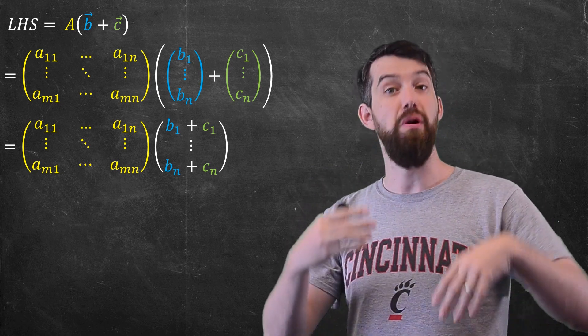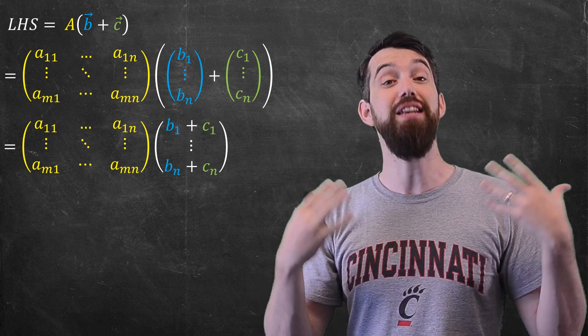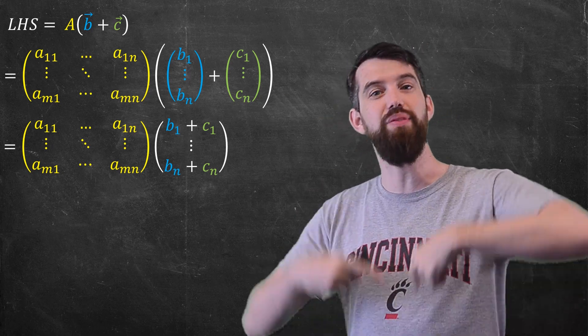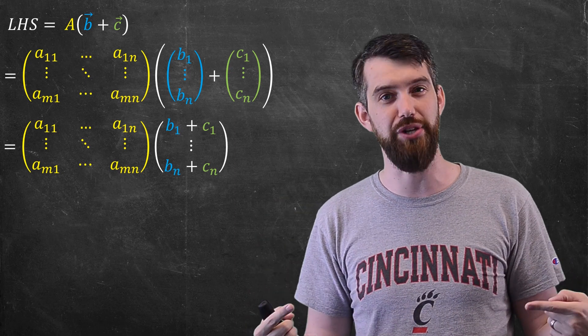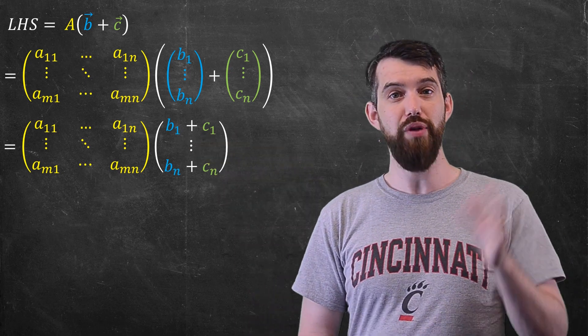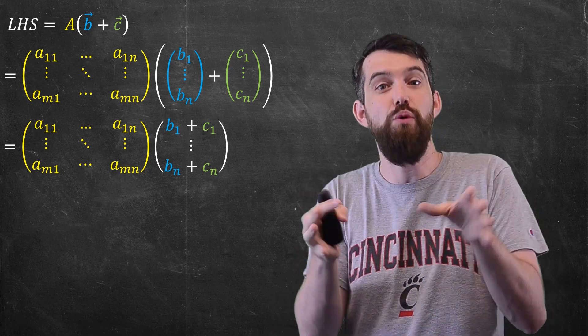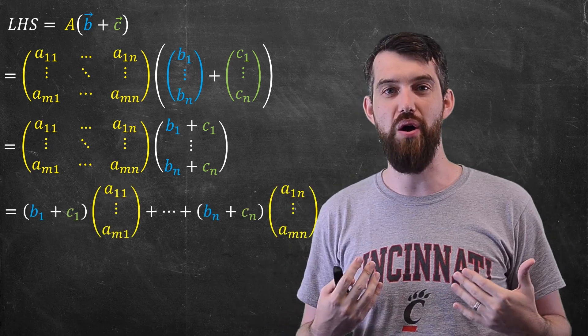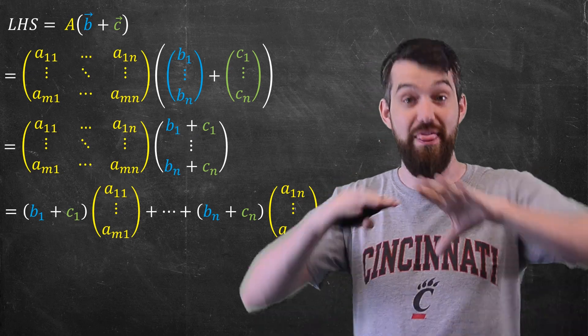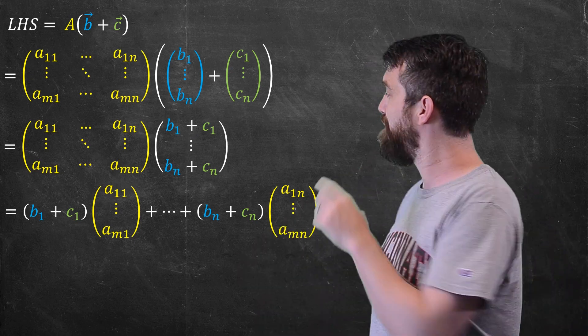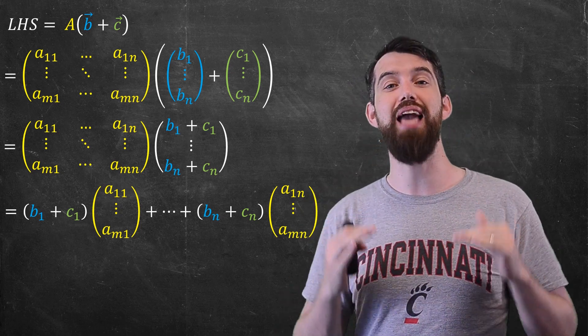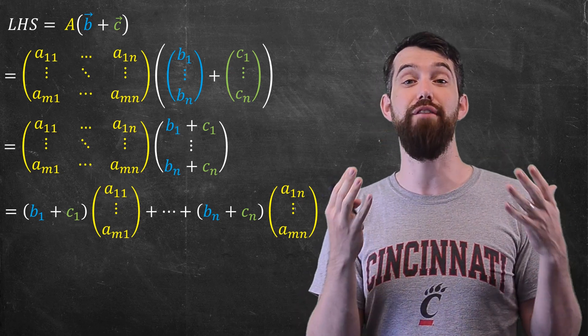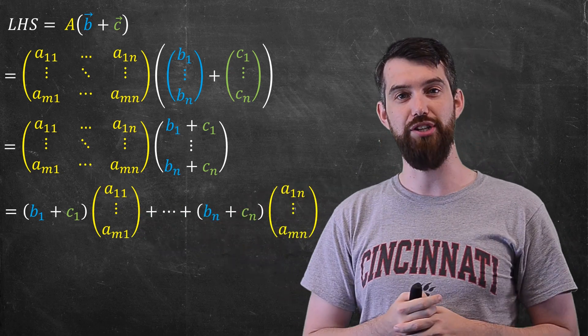So now I have a matrix multiplied by a vector, and I can do the definition of the matrix vector product. Remember, the definition of the matrix vector product was the components of the vector became the scalars in the linear combination whose columns were the columns of the matrix A. So in other words, what I first have is the first component of the vector, the B_1 plus C_1, multiplied by the first column of A. And then that goes all the way along until I have the final scalar, which is the B_n plus C_n, that number, that scalar, multiplied by the final vector, which is going to be the a_1n down to the a_mn, the nth column of the matrix. So I've applied my matrix vector definition, and I've got out this nice linear combination.